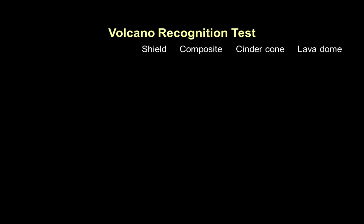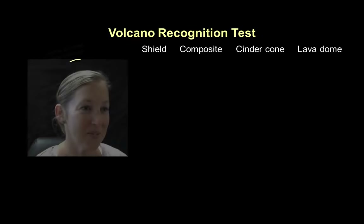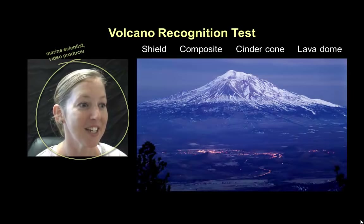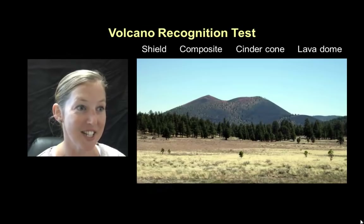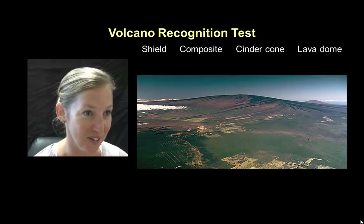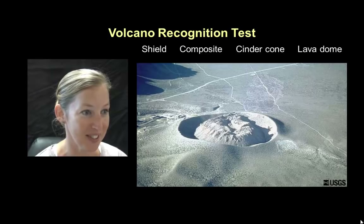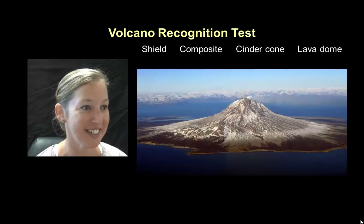Now let's see how well you've assimilated all this information. We're going to show you five pictures of different types of volcanoes and you will have four seconds to classify the image as a shield or composite volcano or a cinder cone or lava dome. Jennifer will be playing along with you — she hasn't seen these images before either. Let's see how you all do. The answers were: composite volcano, cinder cone, shield volcano, lava dome, and shield volcano.